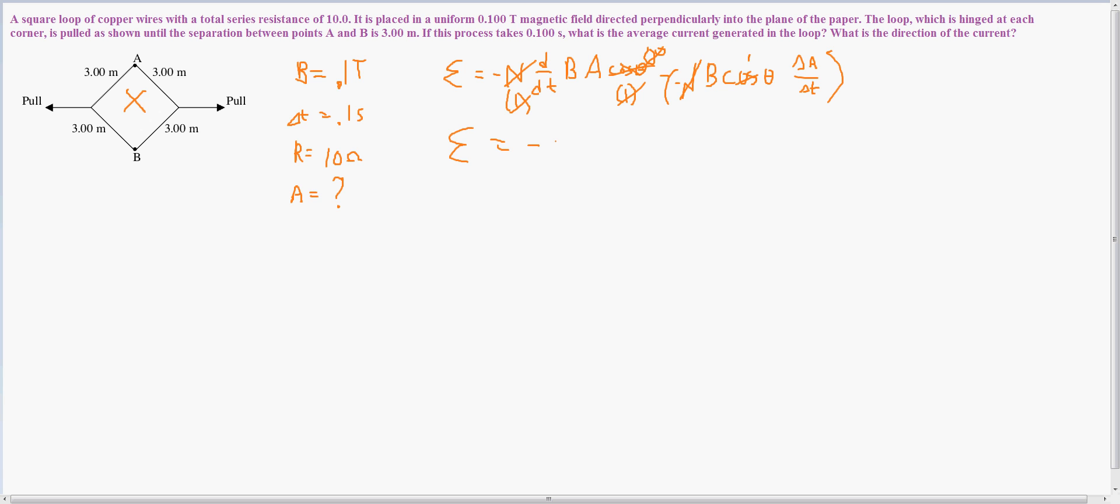So, I have minus 0.1 tesla, then I have 1 divided by 0.1 seconds, because that's the amount of time that elapsed while this was happening, multiplied by the initial area